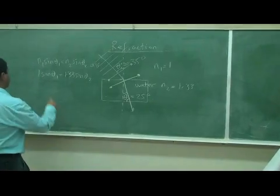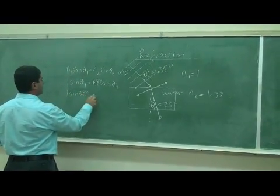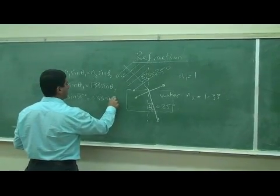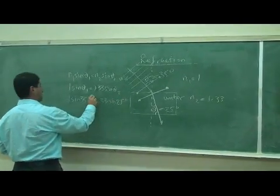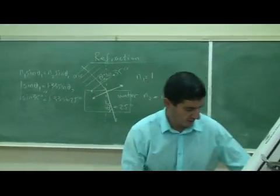So if I do my math here, 1 sine of 35 degrees should be the same as 1.33 sine of 25 degrees. And we could put a question mark here to say, is the equation working?